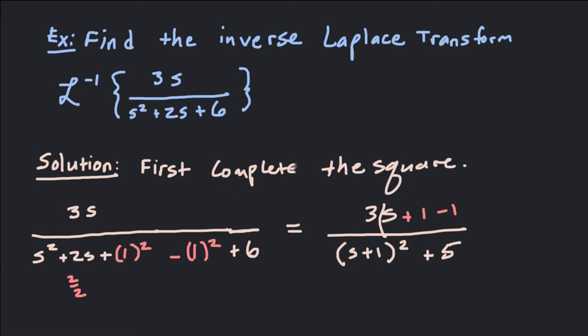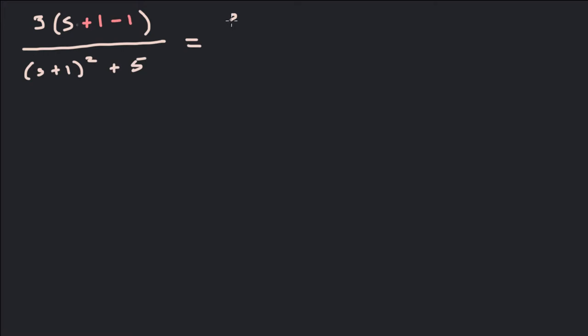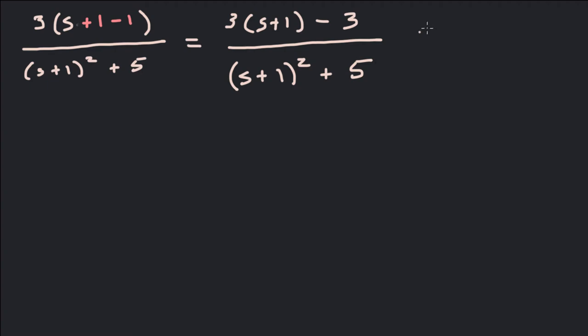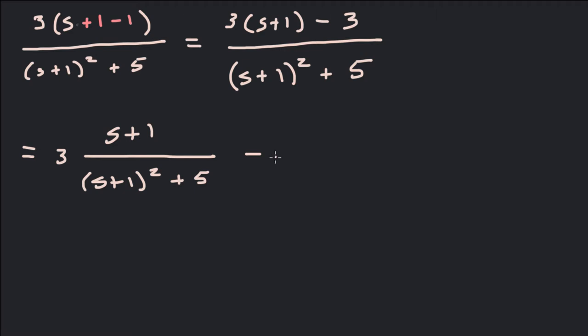What we can do is the same trick on the numerator: add and subtract 1, putting plus 1 minus 1 inside the parentheses. So this is going to be 3 times (s plus 1 minus 1), distributing the 3. That gives us 3(s plus 1) minus 3, divided by (s plus 1) squared plus 5. Now this first part looks like a cosine transform and the second part looks like a sine transform. Let's break up that numerator to get them by themselves.